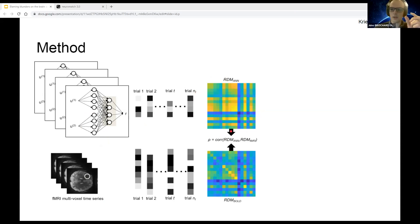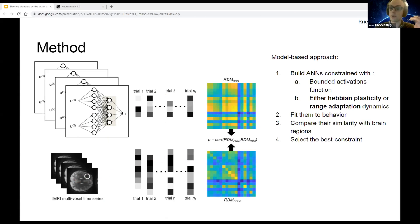I'll do the same for the fMRI scan and compare the two. In this, I'm following a very classical model-based approach. My model will be an ANN with bounded activation such as Gaussian or sigmoid function.